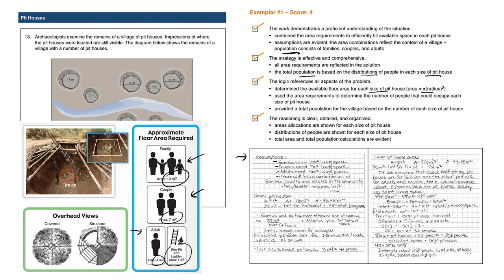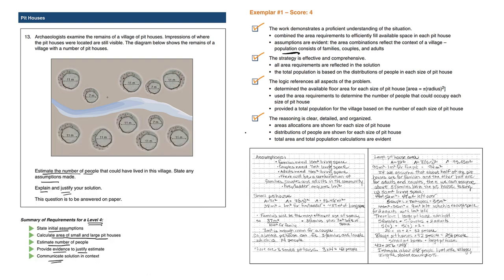Small pithouse. Area equals pi r squared. Notice how we have some small pithouses here. The diameter is seven. Half of seven is 3.5. We calculate the area and we're rounding to around 38. But the logic for subtracting one meter squared for the fire pit slash ladder is now 37 of living space.